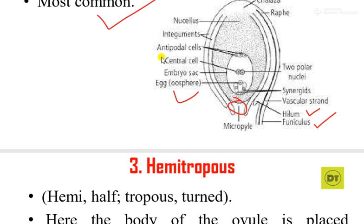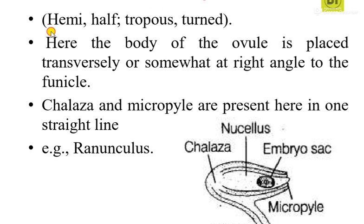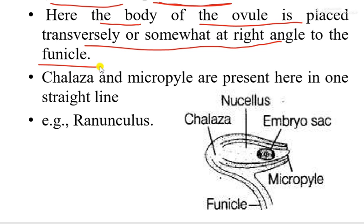Now let's move on to the third type, which is known as hemitropous type. In Greek, the word 'hemi' means half and 'tropous' means turned. Here, the body of the ovule is placed transversely, or at a right angle, to the funicle. The body is attached to the funicle at about a 90 degree angle, and such a type of ovule is known as hemitropous.